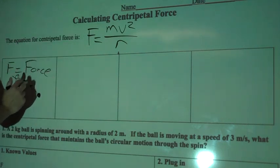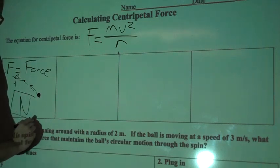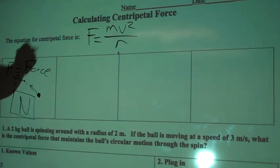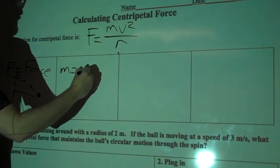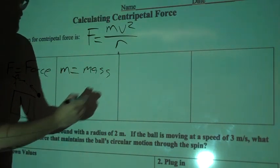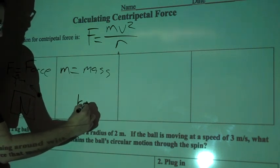Centripetal force, so force is measured in, and you already know this, newtons. The next variable we have here is m, and so m stands for the mass of the object. That's the mass of the object that's swinging, and mass is measured in kilograms.